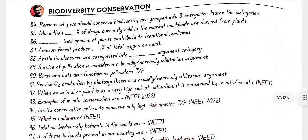Biodiversity conservation: reasons are grouped into three categories — narrowly utilitarian, broadly utilitarian, and ethical. More than 25% of drugs currently sold worldwide are derived from plants; 25,000 plant species contribute to traditional medicines. Amazon rainforests produce 20% of total oxygen on Earth. Aesthetic pleasures and services like pollination (by bees, birds, and bats) and O₂ production by photosynthesis fall under broadly utilitarian arguments.